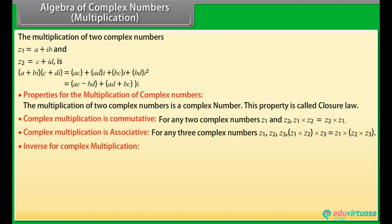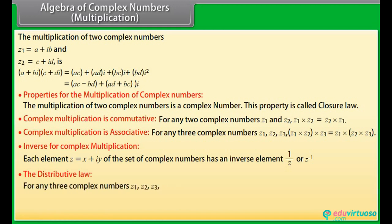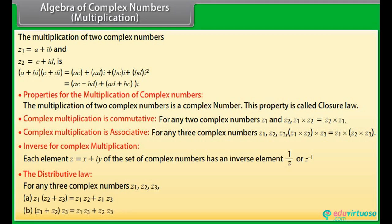Inverse for complex multiplication: each element Z equal to X plus iota Y of the set of complex numbers has an inverse element 1/Z (or Z inverse). The distributive law: for any three complex numbers Z1, Z2, Z3, Z1 times (Z2 plus Z3) is equal to Z1 times Z2 plus Z1 times Z3.